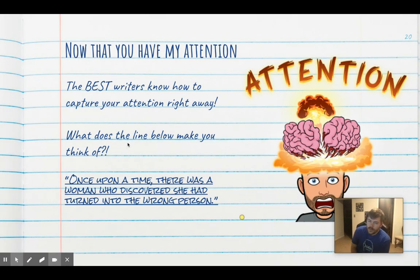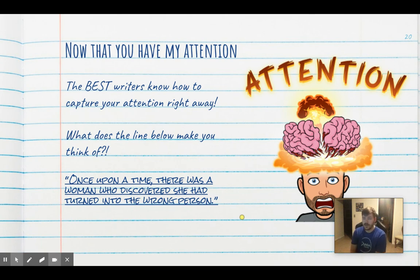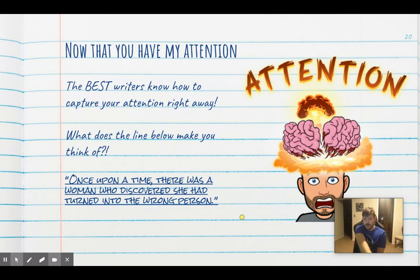We have to grab the reader's attention. The best writers know how to capture it right away. This week when we started reading The Outsiders, the first chapter has Ponyboy getting jumped — the associates show up, pull a knife on him, hold him to the ground and say 'you need a haircut, greaser.' Ponyboy realizes they could kill him. That's how the book starts, and you were hooked. Here's the first line of another book I read in high school: 'Once upon a time there was a woman that discovered she had turned into the wrong person.'